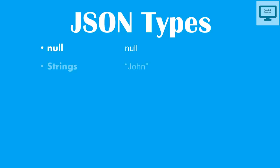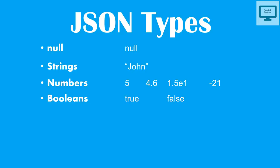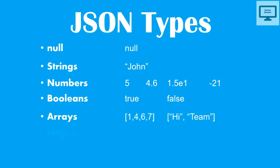JSON can have the following types: null, a string, a number — which includes integers and floats — boolean, which is true or false, an array of numbers or strings, and an object, which is a key-value pair.